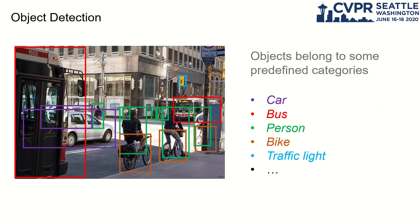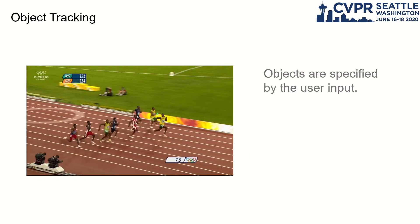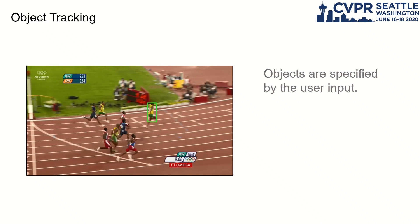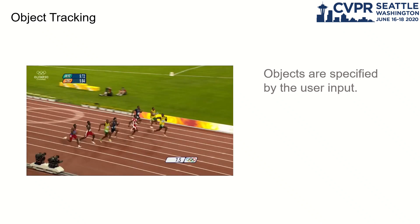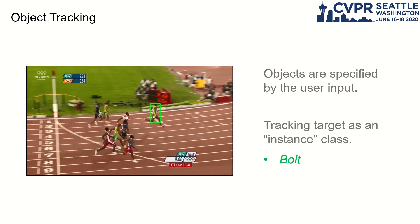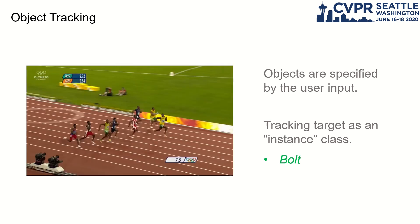First of all, let's have a brief review of detection and tracking. In object detection, we input the image and output the bounding boxes of detected objects. The objects should belong to some predefined categories like car, bus, or person. As for object tracking, the objects are given by user input in the first frame. Compared with object detection, we can also treat the tracking target as a special instance category.